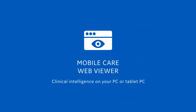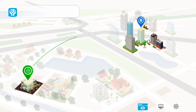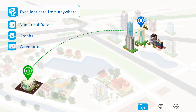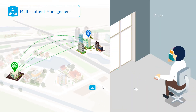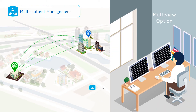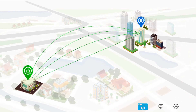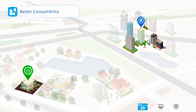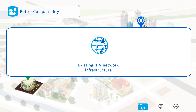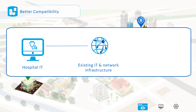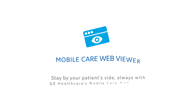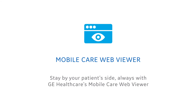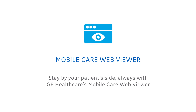With GE Healthcare's Mobile Care Web Viewer, patients' information in the form of numerical, graphical, and waveforms can be accessed from anywhere. Multi-patient monitoring with the multi-view option can help better manage patients across care areas. Mobile Care Web Viewer runs seamlessly with existing IT and network infrastructure, such as laptops or PCs in hospitals, home networks, or mobile devices. Stay by your patient's side, always, with GE Healthcare's Mobile Care Web Viewer.